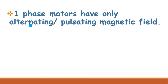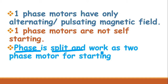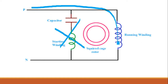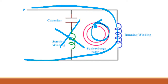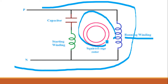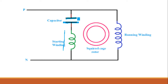A single-phase motor has only alternating or pulsating magnetic field, which is why it is not self-starting. The solution is to split the single phase so that the motor effectively works as a two-phase motor. We do not have a two-phase supply, so the single-phase supply is split into two. To achieve this, we add an additional auxiliary winding — also called the starting winding — with a capacitor connected in series.